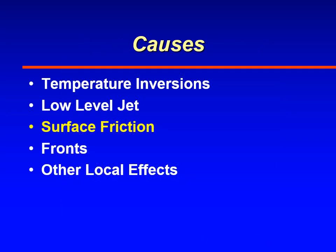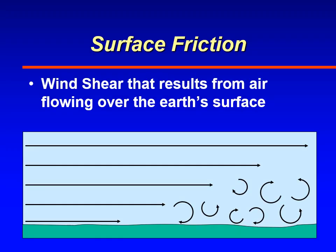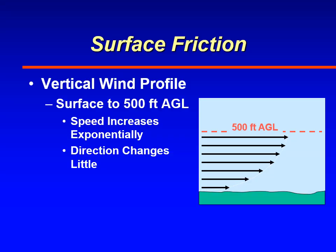Next, we'll talk about how surface friction causes low-level wind shear. Wind blowing over the ground decreases in speed as you get closer to the ground because of friction. Usually at lower altitudes — 500 feet and below — you'll see an exponential change in wind speed but little change in wind direction.